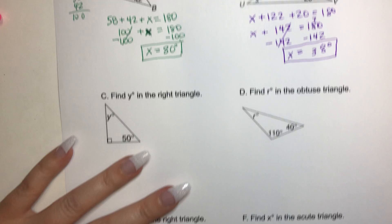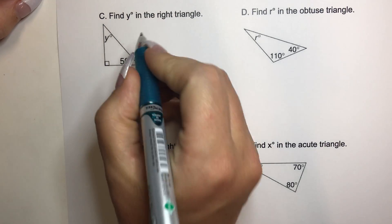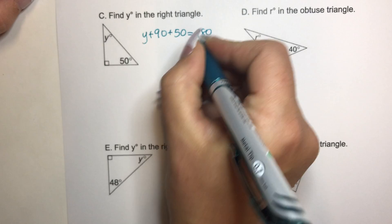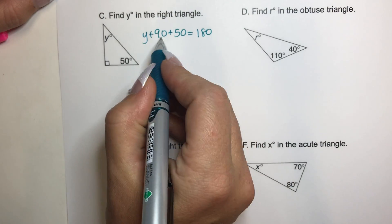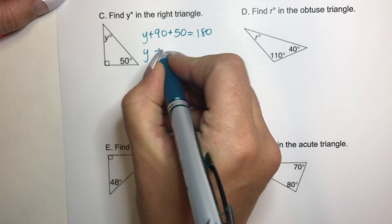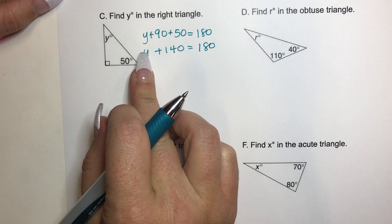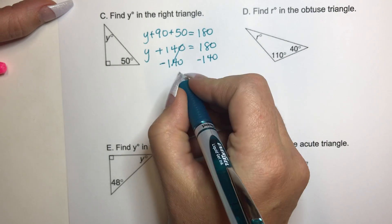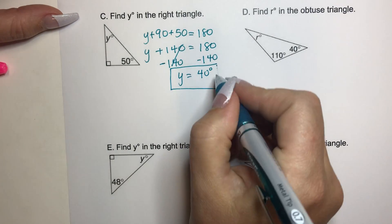Let's go ahead and look at C. C says find Y in the right triangle. So we know it's a right triangle, which means there's one angle that has 90 degrees, right? So we're going to go Y plus 90 plus 50, that all equals 180. That's our lovely triangle sum theorem equation. And then we have to combine like terms, right? So that would be 140. 90 plus 50 is 140. And we want to get Y by itself. Right now it's being added, so we do the inverse operation, we subtract by 140 to both sides. And 180 minus 140 would be 40 degrees. So that's how you do it.